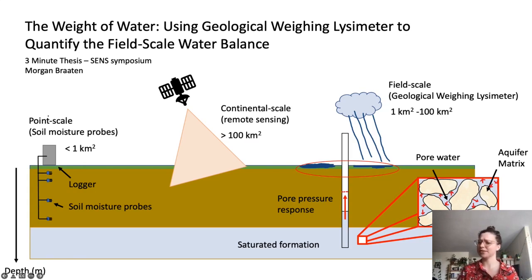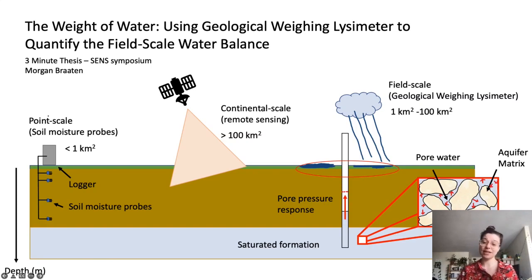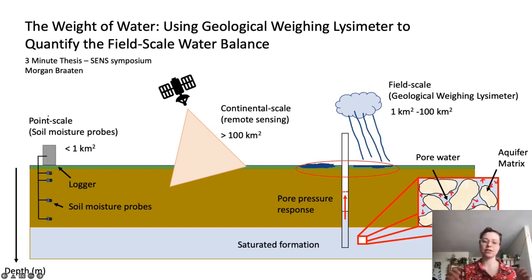So how do we measure total water storage at field scale? Well, the answer is the geological weighing lysimeter. These instruments use a saturated geological formation's pore-pressure response to mechanical loading measured in an observation well. Basically, when water accumulates on the surface above the formation, this creates a load, and that load induces stress, and the stress moves instantaneously with depth to the formation. Because the matrix is much more compressible than the water, the water bears the entire load, and we get an increase in pore pressure.